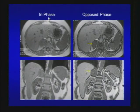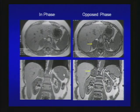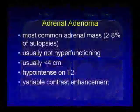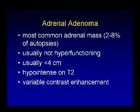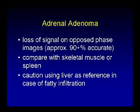In-phase imaging: water and fat signals are additive, therefore bright signal. Opposed-phase image: water and fat signals cancel, therefore dark signal. Here's an example on coronal in-phase and opposed-phase imaging of a right adrenal gland mass. In-phase, the mass is slightly more hyperintense than the adjacent spleen. On opposed-phase it's darker than the adjacent spleen — signal drop on opposed-phase is diagnostic for adrenal adenoma. Adrenal adenomas are the most common adrenal masses, usually non-hyperfunctioning, usually less than 4 cm, may be hypointense on T2, and loss of signal on opposed-phase images is approximately 90-plus percent accurate. Do not use liver as a reference as liver can be fatty infiltrated and demonstrate signal loss on opposed-phase itself.